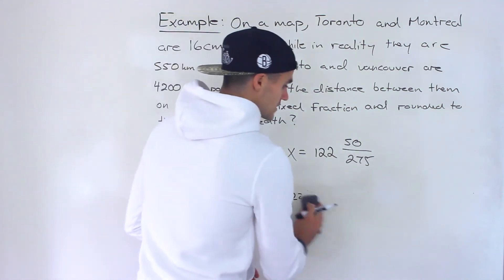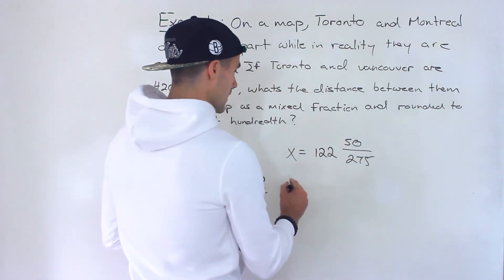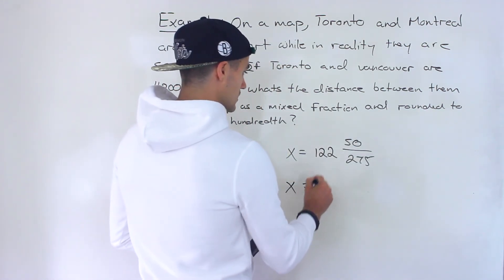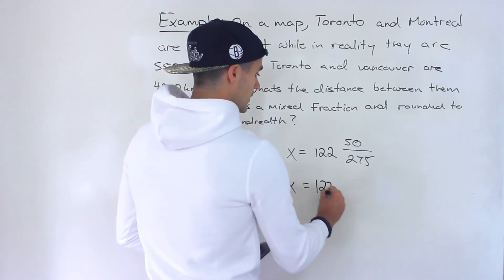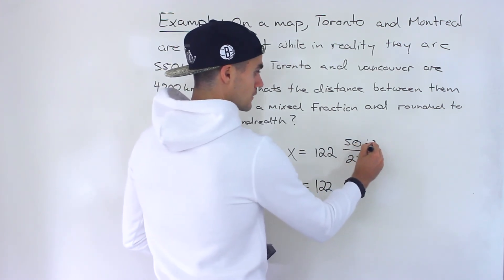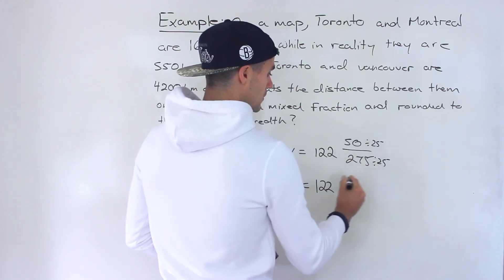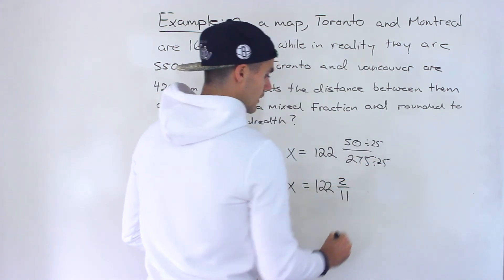So that's how it would be as a mixed fraction and then 50 over 275 we can actually simplify that because we can divide this by 25 and we would get 2 11ths.